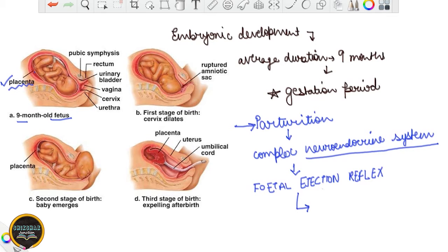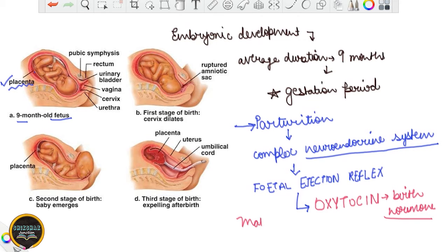After the fetal ejection reflex, it triggers the release of another hormone — oxytocin, known as the birth hormone — because it is released after the fetal ejection reflex and leads to the parturition process. Oxytocin is released from the maternal pituitary and acts on the uterine muscles, inducing strong contractions and relaxations, which in turn lead to the expulsion of the baby.